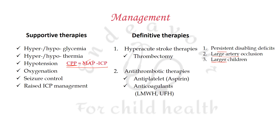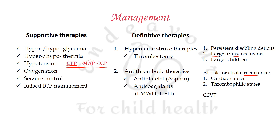The second kind of definitive therapies are antithrombotic therapies, which include antiplatelet agents like aspirin and anticoagulants like low molecular weight and unfractionated heparin. There are two major indications: first, arterial stroke patients at risk for recurrence — including those with cardiac causes and thrombophilic causes — and second, CSVT patients, that is, venous stroke patients.